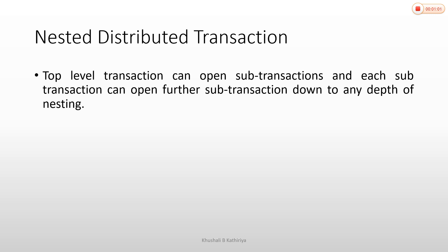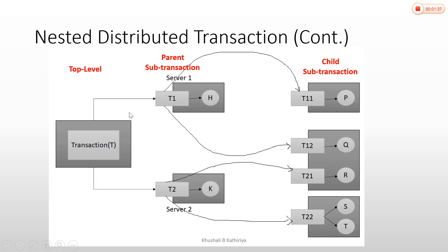The main transaction is called the top-level transaction, or the first-level transaction. The second level is the main transaction divided into sub-transactions — these are called sub-transactions or parent transactions. The sub-transactions are then divided into further sub-transactions, making them child transactions. Child transactions can also have sub-sub-transactions, allowing us to move further down to any depth of nesting.